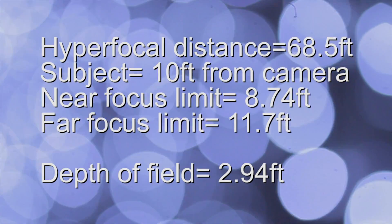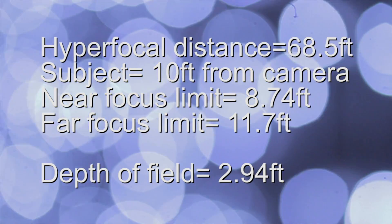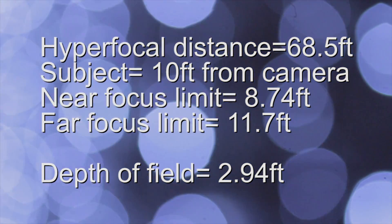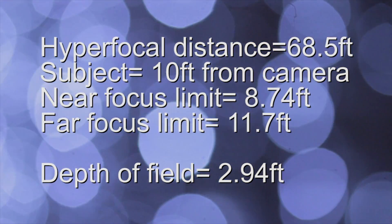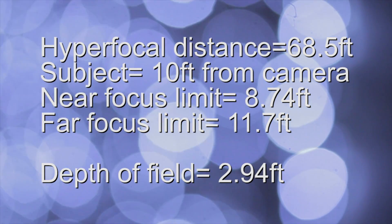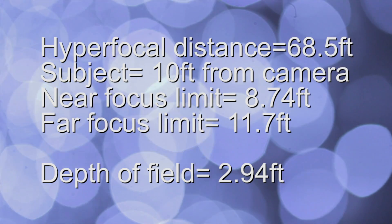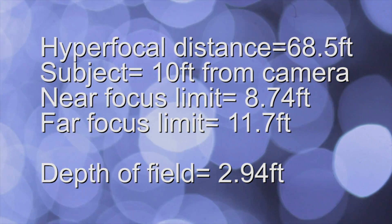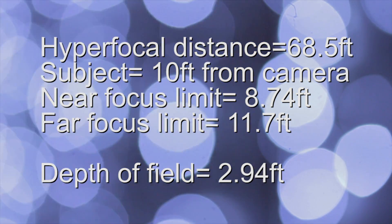So what does this all mean? Well, it means that if our focus on our lens is set to 10 feet and our subject starts standing at 10 feet, they can move either a foot and a half in front of them or a foot and a half behind them and still remain within acceptable focus because we have a total of 2.94 feet depth of field.